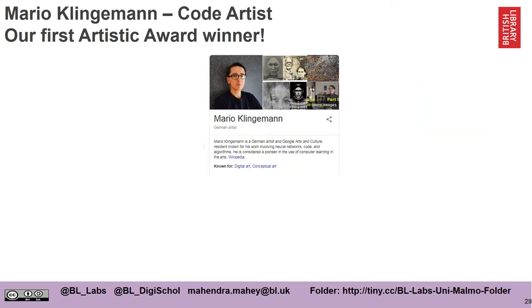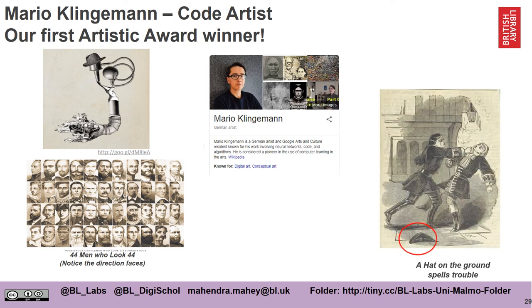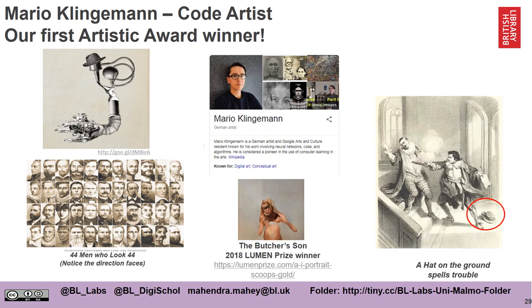Mario Klingerman, a code artist, was our very first artistic award winner. Mario did some very exciting work with the images from these books — he started using algorithmic methods to identify what was in the images. For example, on the left you can see 44 men who look 44. He used face recognition algorithms to classify the faces. On the right are a collection of images he calls 'a hat on the ground spells trouble.' Mario then did some further algorithmic work creating computational portraits using a set of Western portraiture images that had been digitized, and he won a major arts prize as a result of this.